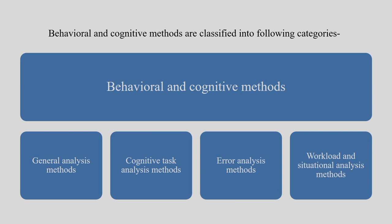This is the schematic representation of how we divide them in a broad classification: general analysis, then cognitive task method, error analysis, and workload and situation analysis. It is not that each component is important for every research. Depending on the requirement and type of objectives you have, you can pick one, pick two, or follow all four. It is not mandatory to go in sequence. However, whenever we start any kind of intervention, it starts with general analysis method because it gives direction.